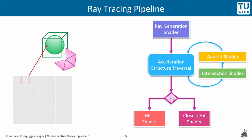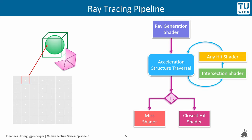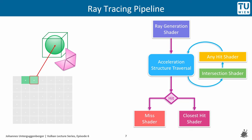For the neighboring pixel, the device recognizes during acceleration structure traversal that the ray hits the bounding box of the procedurally described sphere. To find out if the sphere has really been hit, its associated intersection shader is invoked, which must perform a ray-sphere intersection in shader code. The intersection shader reports that the sphere has been hit, so the closest hit shader is invoked, leading to a green color being computed for the affected pixel. The same applies for the next neighboring pixel.